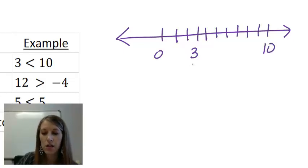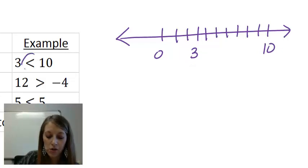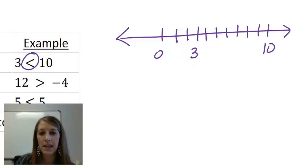I can see that 3 is to the left of 10 on the number line. So that's why 3 is less than 10.